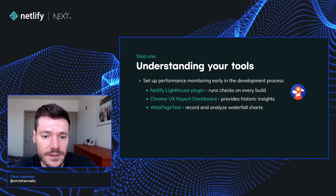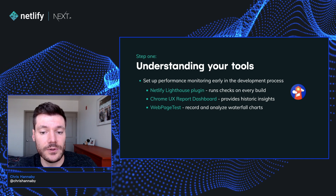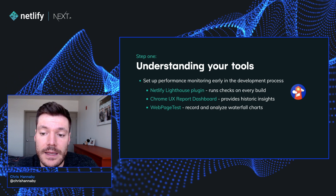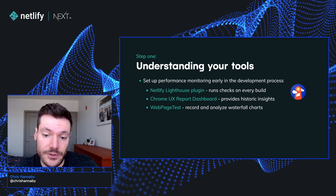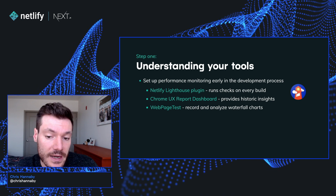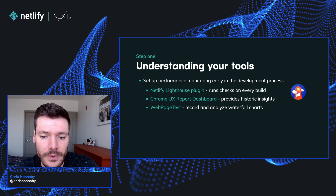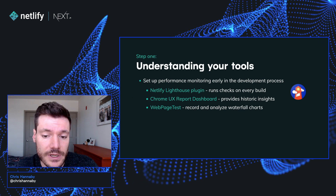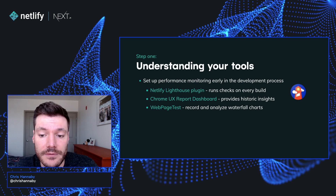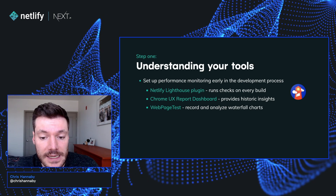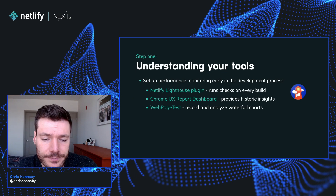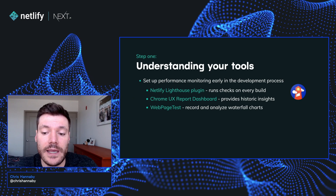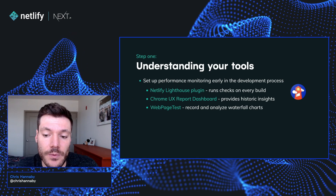There are a load of great tools to help you do this. On Netlify, you can install a Lighthouse build plugin, and that's going to run checks against every single build of your site. Since this is tied to your Git commit history, this can be a great way to find the root cause of any regressions. The Chrome UX report project provides a range of tools that can be used to understand real user data once your site is live, and the dashboard is particularly useful for understanding historic trends. And finally, WebPageTest is great for digging into individual pages and looking at specific optimizations using the waterfall chart.